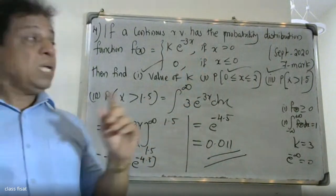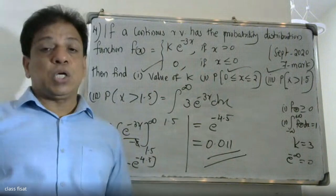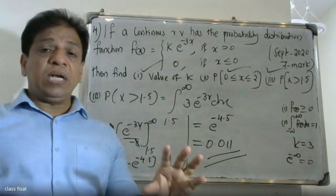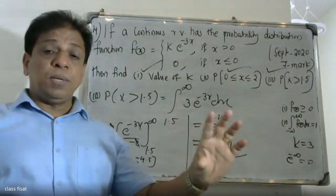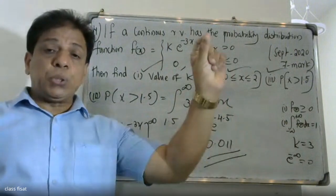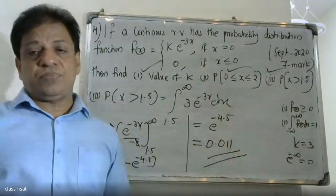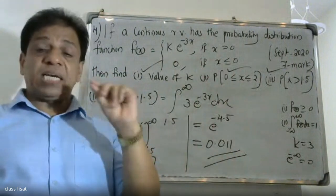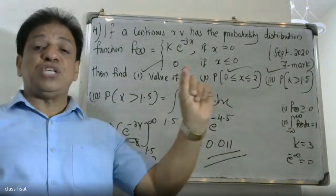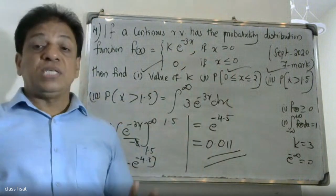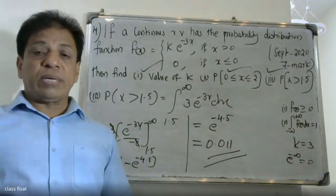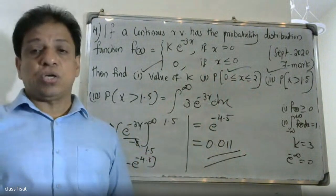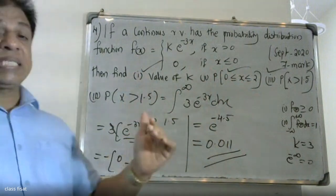To summarize: a valid PDF must satisfy f(x) ≥ 0 and the integral from minus infinity to plus infinity of f(x) dx equals 1. The answers are: k = 3, probability of 0 ≤ x ≤ 2 is 0.998, and probability of x > 1.5 is 0.011.